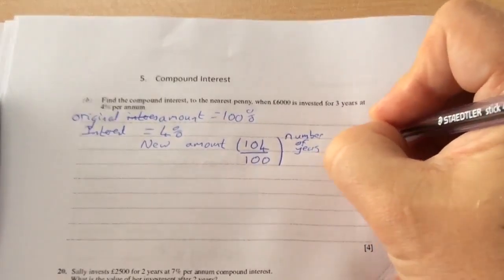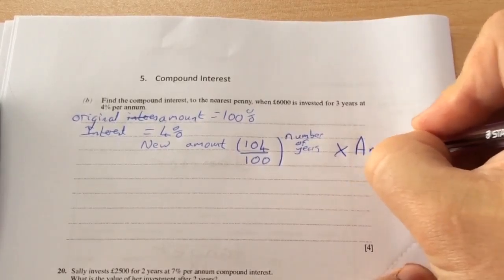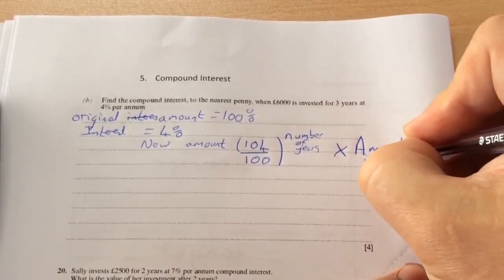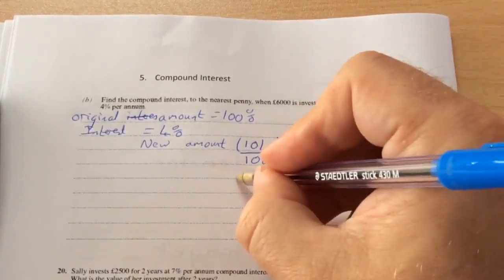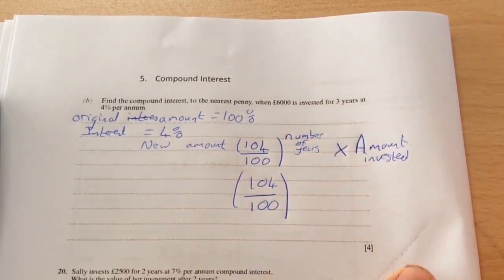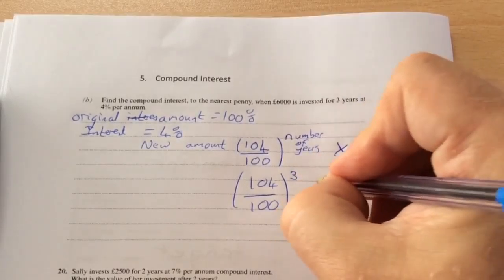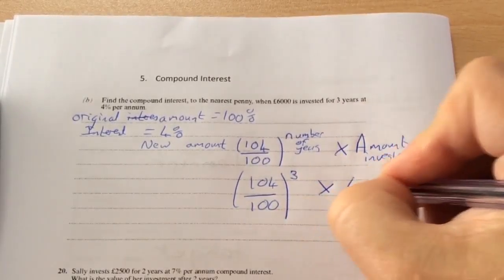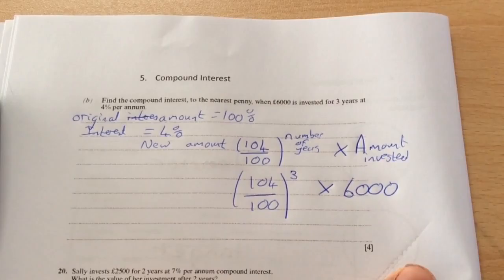And multiply by the amount invested. So in terms of this question here, it'd be 104 divided by 100, which is 1.04, to the number of years, which is three, multiplied by £6000.